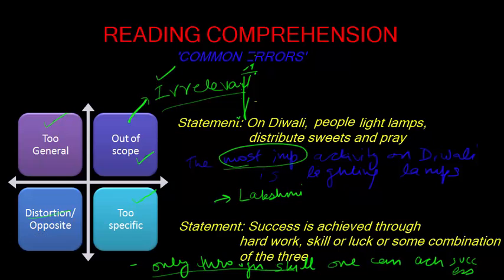Now, we have done distortion. The last error left is opposite. Again, look at the statement. Success is achieved through hard work, skill or luck or some combination of the three. Listen to this carefully, the statement in the answer choices is that people who are either hard working, skillful or lucky, are not likely to achieve success.